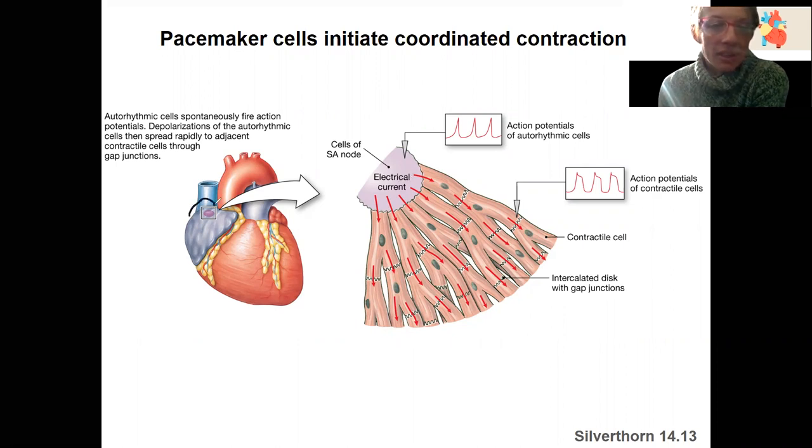So we're going to be looking at this node. This is our SA node, sinoatrial node. And this is where there's autorhythmic cells that determine heart rate. How do they fire? They are autorhythmic and they've got this pacemaker potential caused by funny currents, funny channels that allow for spontaneous depolarization over and over and over again.